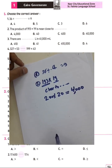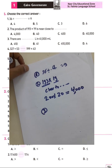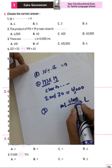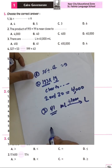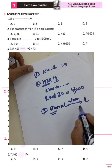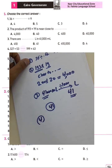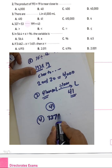Question number three: there are how many liters in 41,000 milliliters? To convert from milliliters to liters you must divide by 1000. So 41,000 divided by 1000, the result will be 41 liters.